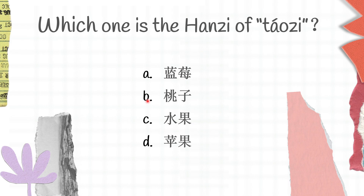The next question: which one is the character for 桃子 (taozhe)? I will give you time to think, and if you don't know the answer it doesn't matter, just try to guess. A is 蓝莓 (lan mei), B is 桃子 (taozhe), C is 水果 (sui guo), and D is 苹果 (ping guo). Therefore, 桃子 is B.